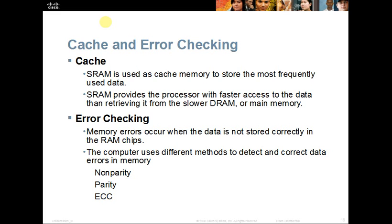Because computers do make errors, if we have memory chips that can check those errors, they can make sure the data being processed is correct and the computer will work better. There are three types of data error checking: non-parity, parity, and ECC.